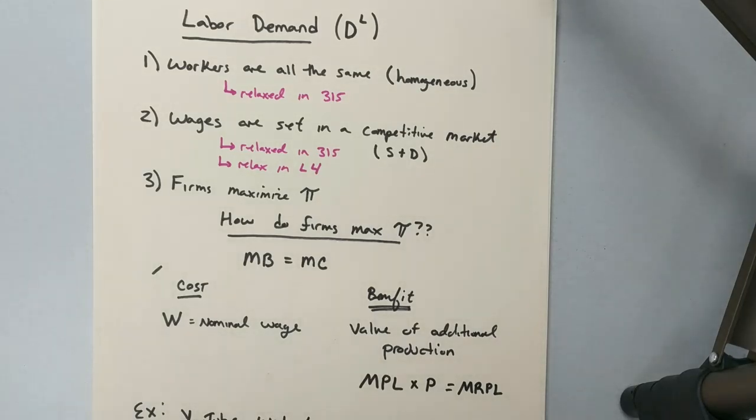Well, in your micro class, you might have heard a lot of things about marginal revenue equals marginal cost because you're trying to decide on how many things to produce. In this case, we're actually trying to make a decision on how many people to hire, but the same exact base decision needs to be made.